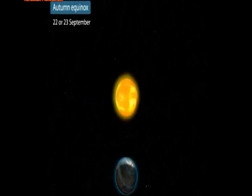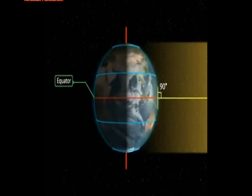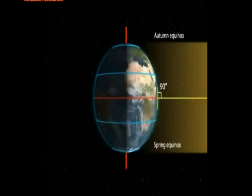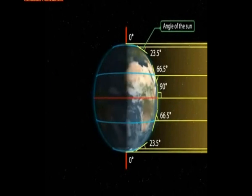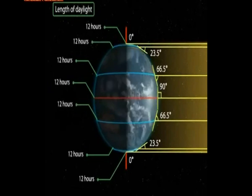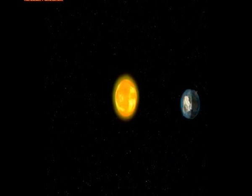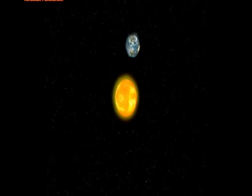Autumn Equinox: On the 22nd or 23rd of September, the overhead sun is over the equator again, which receives the largest amount of solar radiation. On this day, the northern hemisphere is in the autumn equinox while the southern hemisphere is in the spring equinox. The angle of the sun decreases towards the poles, and the two hemispheres receive a similar amount of solar radiation, with the length of day and night the same at all places on earth. After this day, it is autumn in the northern hemisphere where the day is shorter than the night, while in the southern hemisphere it becomes spring when the day is longer than the night.